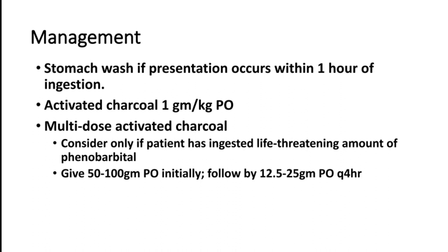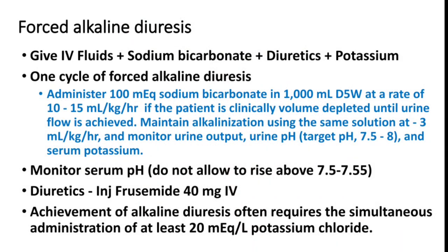The next important treatment option in phenobarbital poisoning is forced alkaline diuresis. We use IV fluids, sodium bicarbonate, and diuretics for removal of the drug via urine. Some patients may require potassium supplementation, as giving larger volumes of sodium bicarbonate carries a high chance of hypokalemia. One cycle of forced alkaline diuresis is 100 milliequivalents of sodium bicarbonate in one litre of 5% dextrose at 10 to 15 ml per kg per hour until urine flow is achieved.